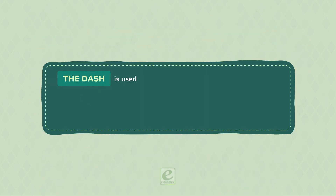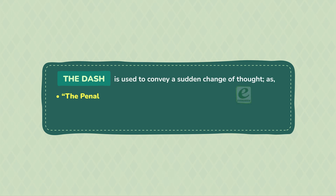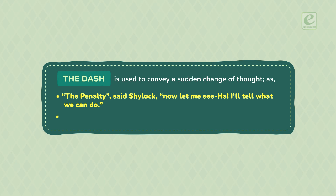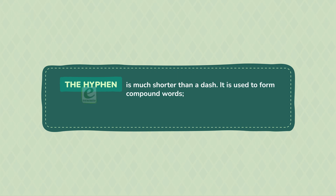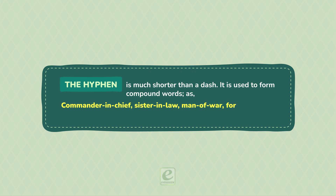The dash is used to convey a sudden change of thought, as: 'The penalty — said Shylock — now let me see — ha, I'll tell what we can do.' The postmaster, a fat, amiable fellow, also broke out laughing. The hyphen is much shorter than a dash. It is used to form compound words, as: Commander-in-chief, Sister-in-law, Man-of-war, Forget-me-not, Bathing-place, One-fourth.